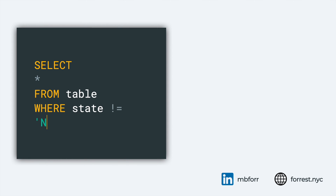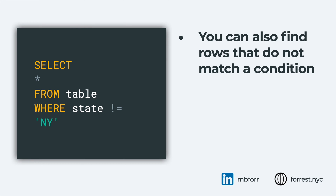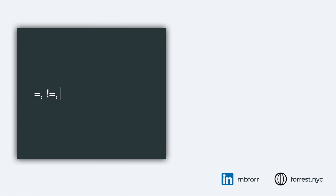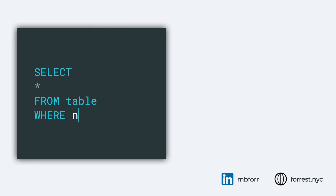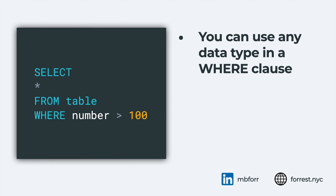You can use WHERE in different ways. You can say where the state does NOT equal 'ny' using a different operator. There's actually a lot of different operators: equals, not equals, greater than, less than, greater than or equal, less than or equal. Take a look at those for the specific flavor of SQL you're using. You can use any data type — a date, a string, a number, and sometimes even a geometry. We'll talk about how to use those in a spatial context later. When you see WHERE following FROM, that means you're limiting or returning a subset of the data.